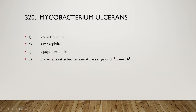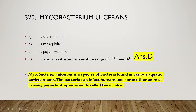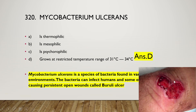Mycobacterium ulcerans is thermophilic, mesophilic, psychrophilic, or grows at a restricted temperature range of 31°C to 34°C. The right answer is option D — it grows at a restricted temperature range of 31°C to 34°C. Mycobacterium ulcerans is found in aquatic environments and causes persistent open wounds called Buruli ulcer in humans.